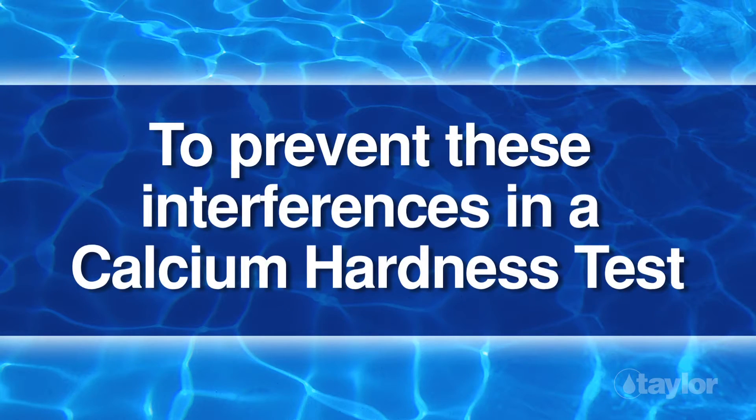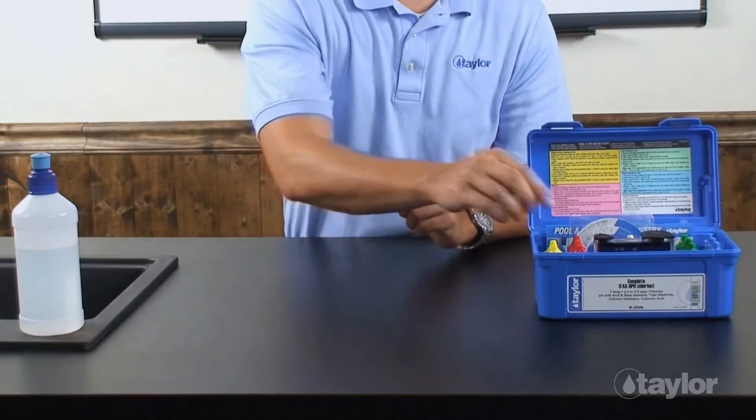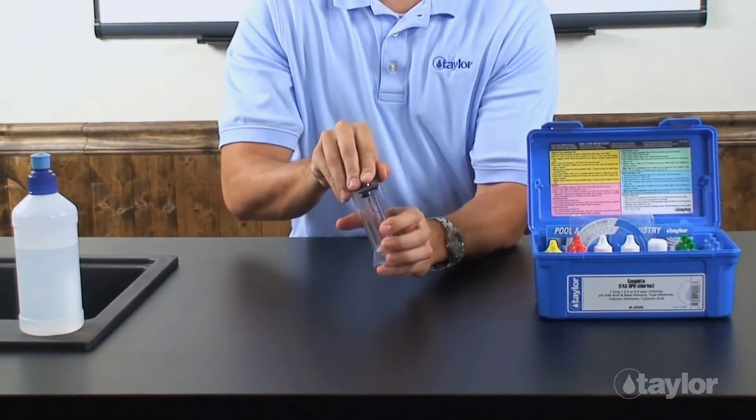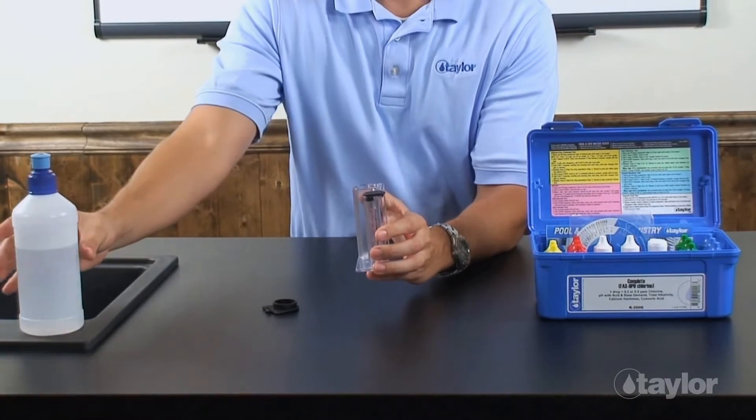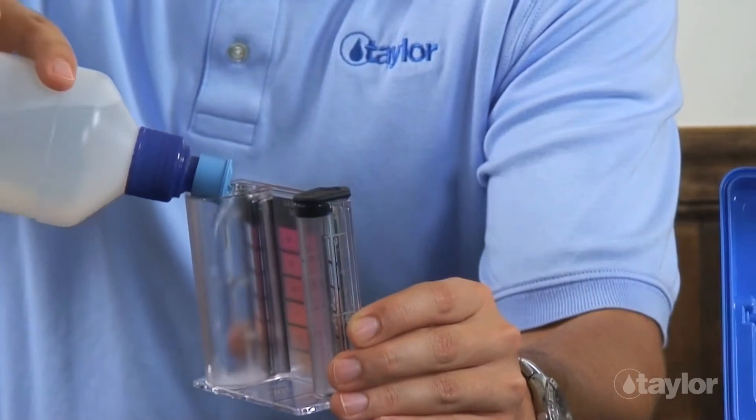To prevent these interferences in a calcium hardness test, add additional reagent 12 at the beginning of the test. Rinse and fill the large comparator tube to the 25 ml mark with the water to be tested.